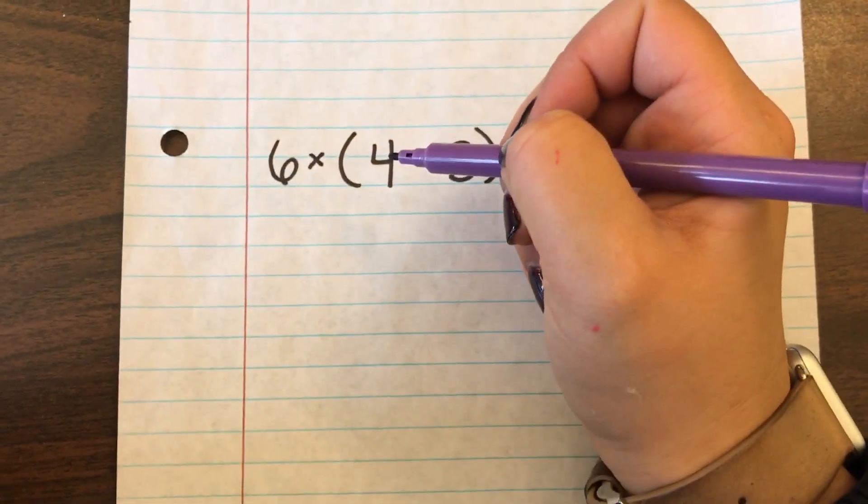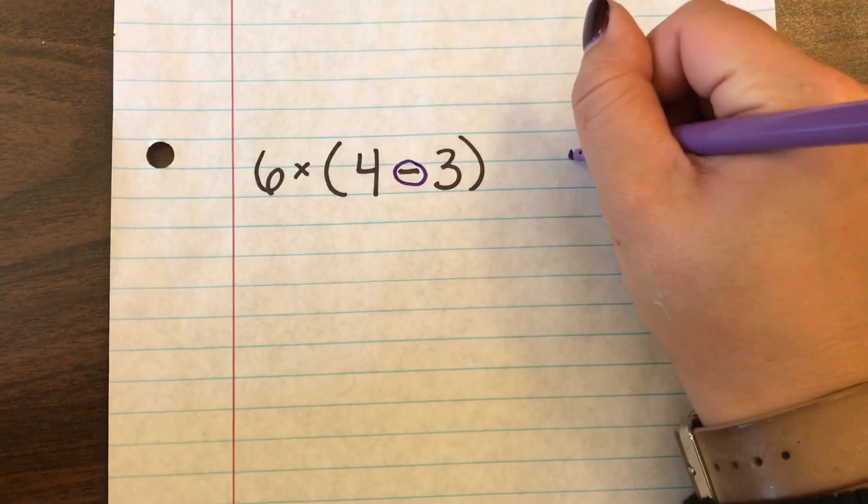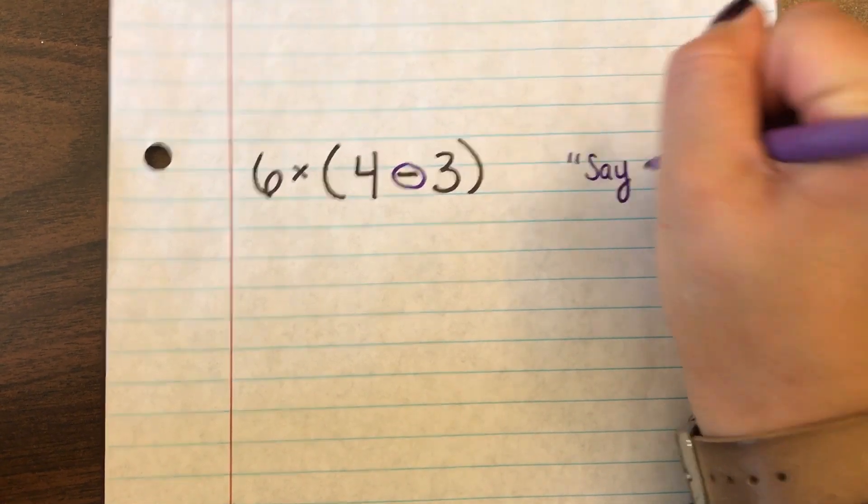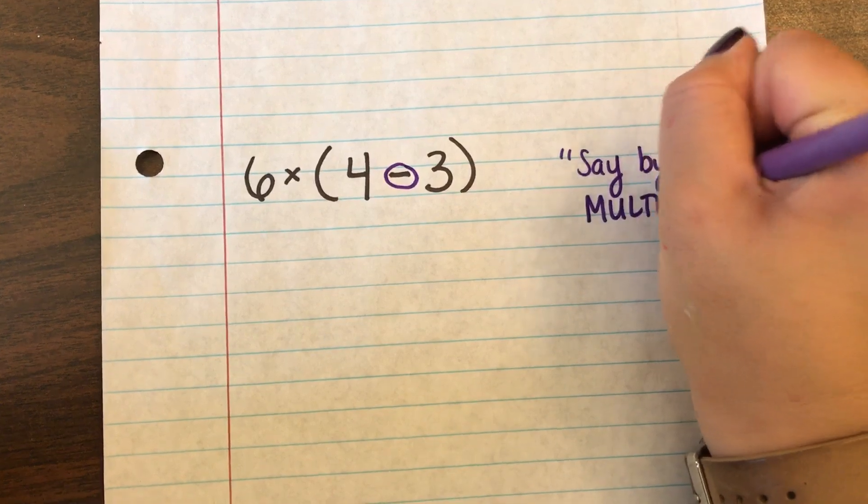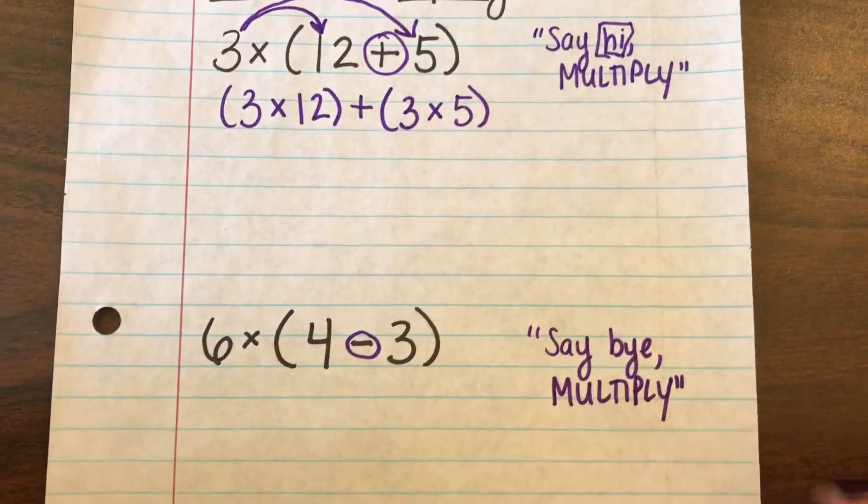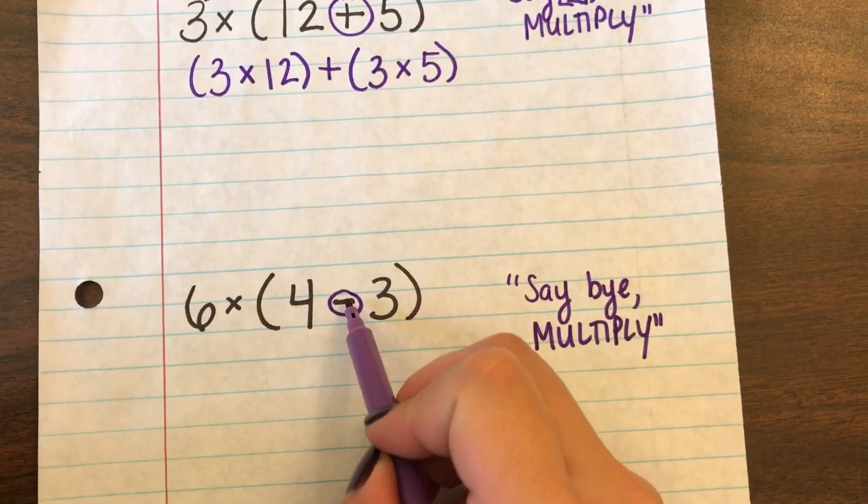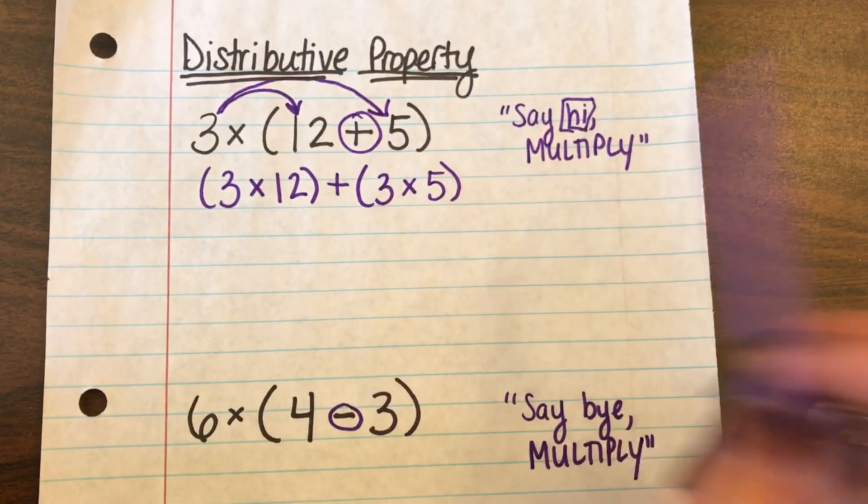Now the second one down here I see a minus sign. So the way I like to think of that one is say bye multiply. So whether it's subtraction or addition you are going to be multiplying. It's just the minus sign will remind you that it's bye and the plus sign is going to be hi.